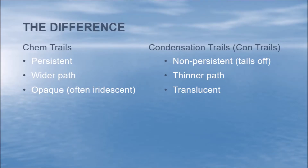The difference between chemtrails versus contrails is that chemtrails are very persistent. They remain solid and constant all the way across the sky. They have a wider path than a contrail and they are opaque and sometimes even iridescent or even different colors. Whereas a condensation trail is non-persistent. It usually tails off after the plane has gone a certain distance across the sky, and it's a thinner path and tends to be translucent.